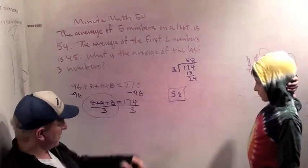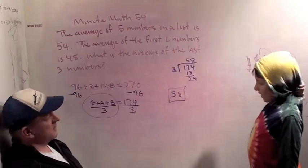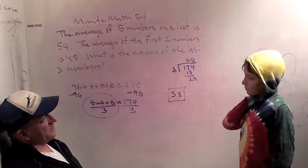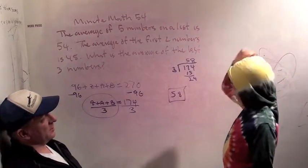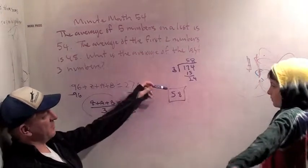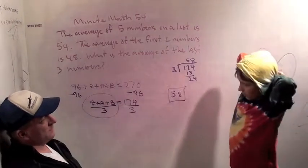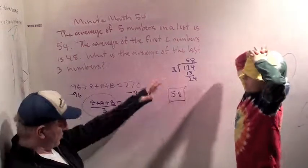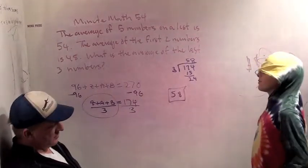Now, is there a quick way to see that 174 divided by 3 is 58? Well, 180 divided by 3 is 60. And how much do you have to subtract? I have to subtract 6 to get to 174, which means how much do you have to subtract from 60? You have to subtract 2. So that wouldn't have been super hard to do in your head, but long division is always easy, too.